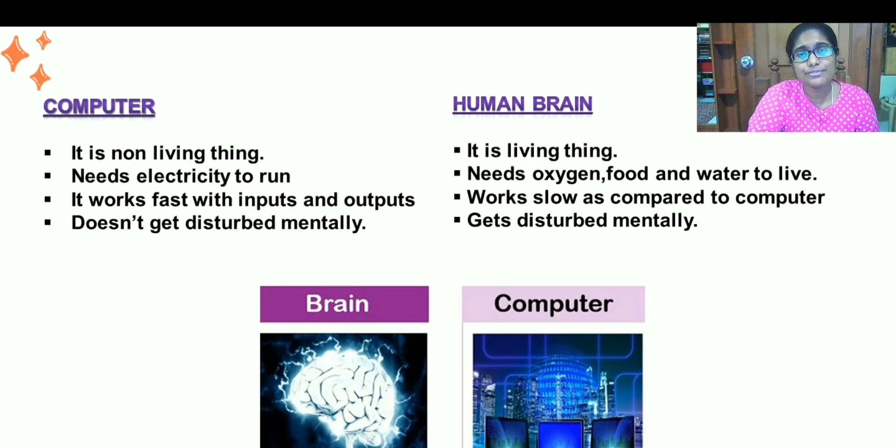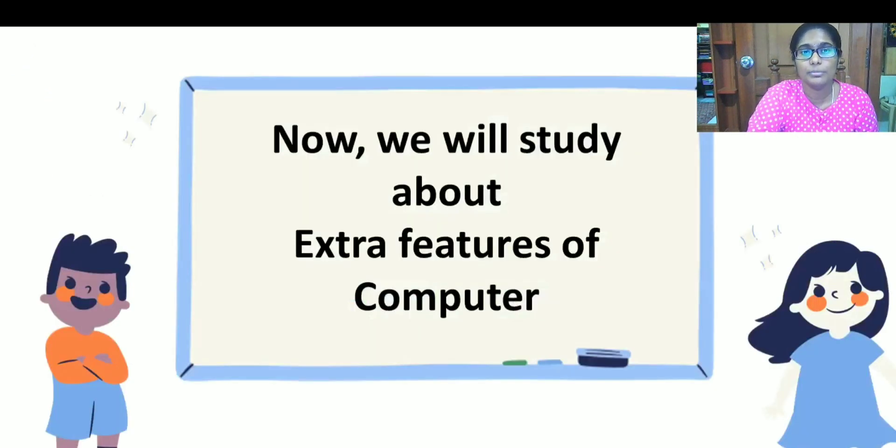Computer works faster based on our input and output. But, human brain also works faster but not as compared to computer. Human brain can get disturbed mentally and physically while computer doesn't get any tiredness or disturbance.